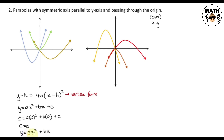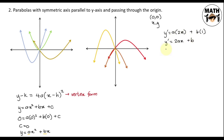We have two arbitrary constants: a and b. So we differentiate twice. Differentiating once: y prime equals 2ax plus b. Differentiating again since we have two arbitrary constants: y double prime equals 2a, since the derivative of b (a constant) is 0. So y double prime equals 2a.